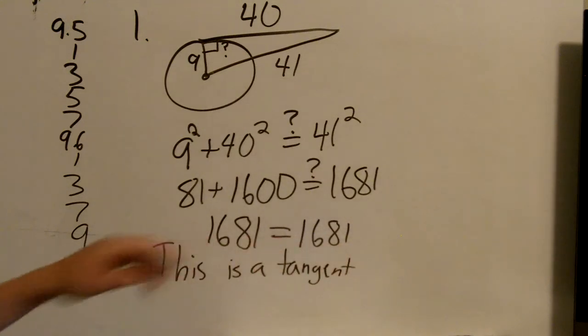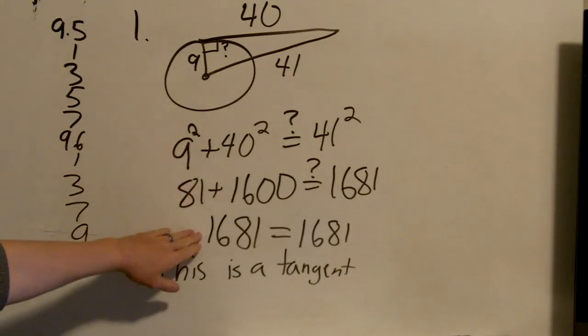So remember, if that was not equal to each other, that means that it is not a tangent. This is justifying your answer. So whenever it says justify your answer, all you need to do is show the math behind it.